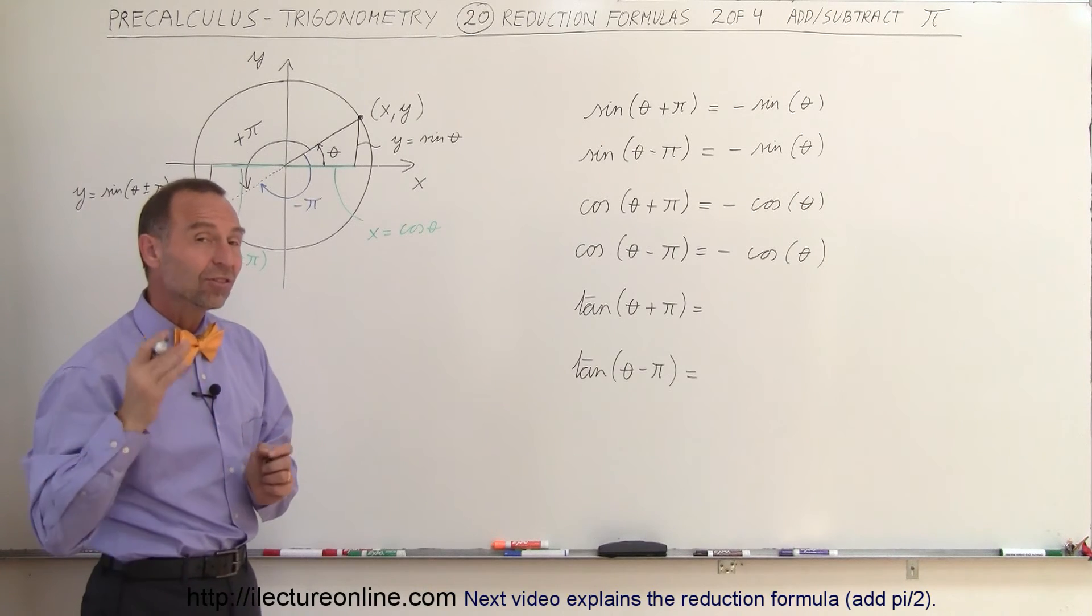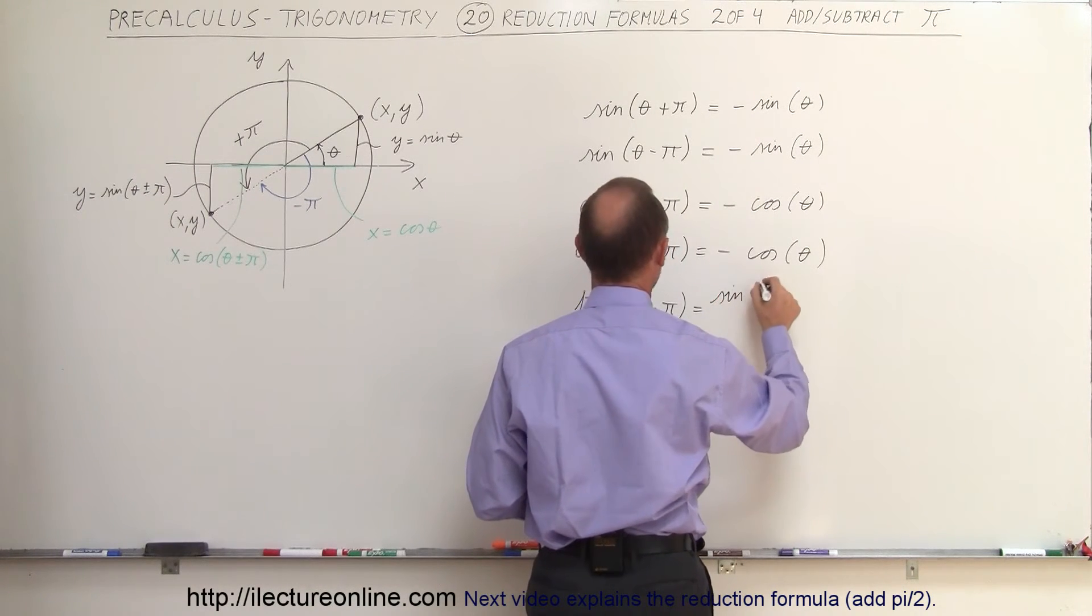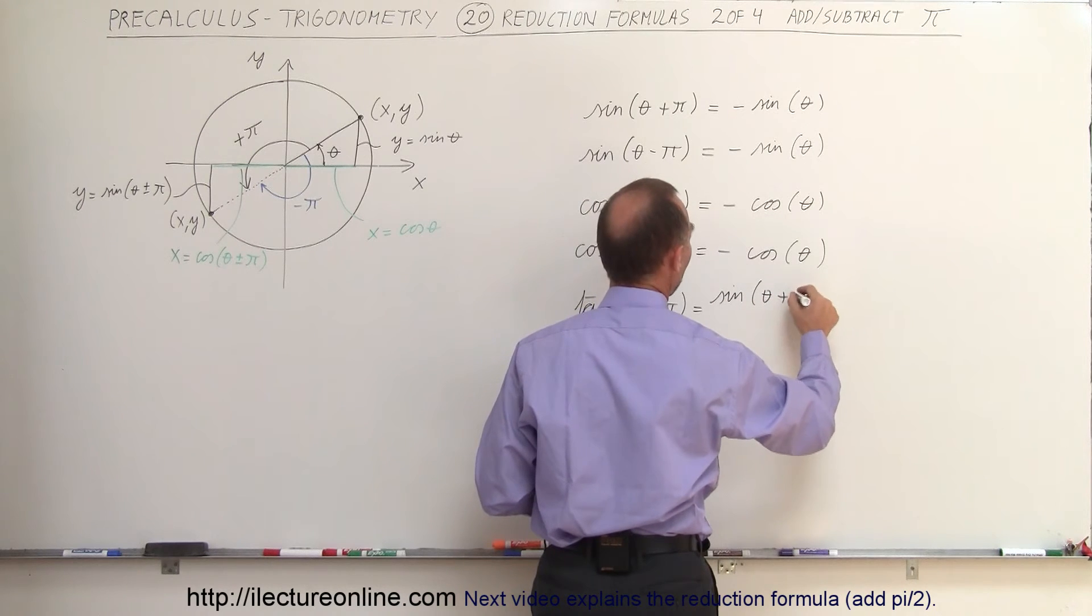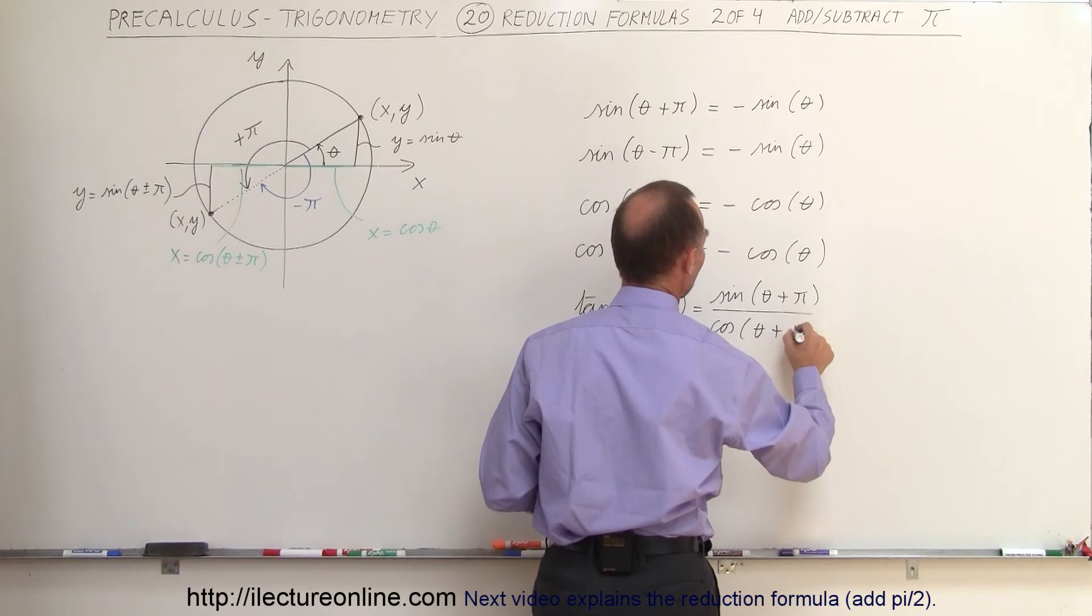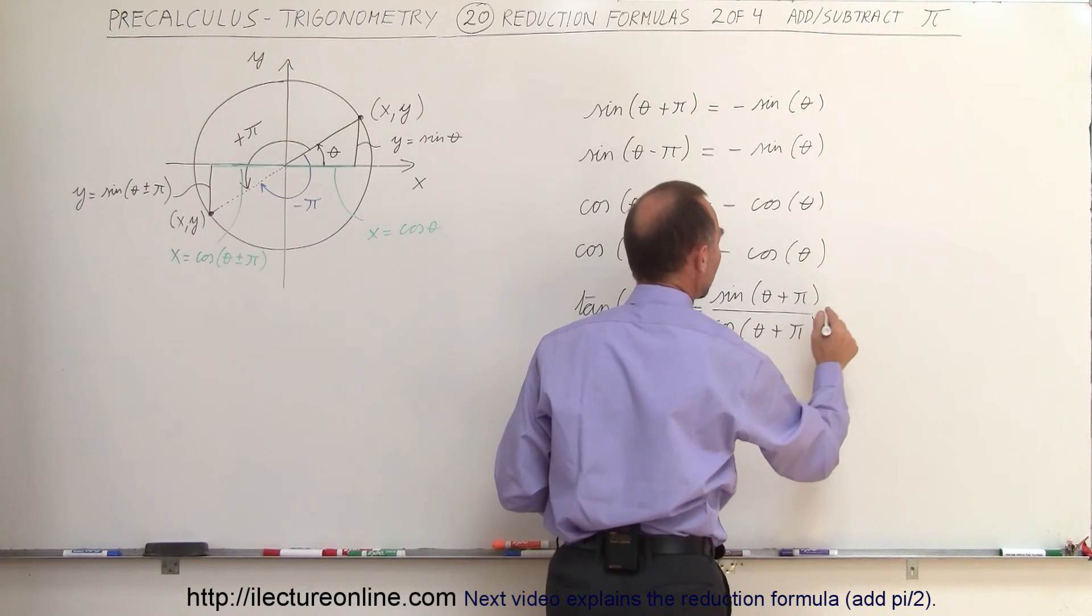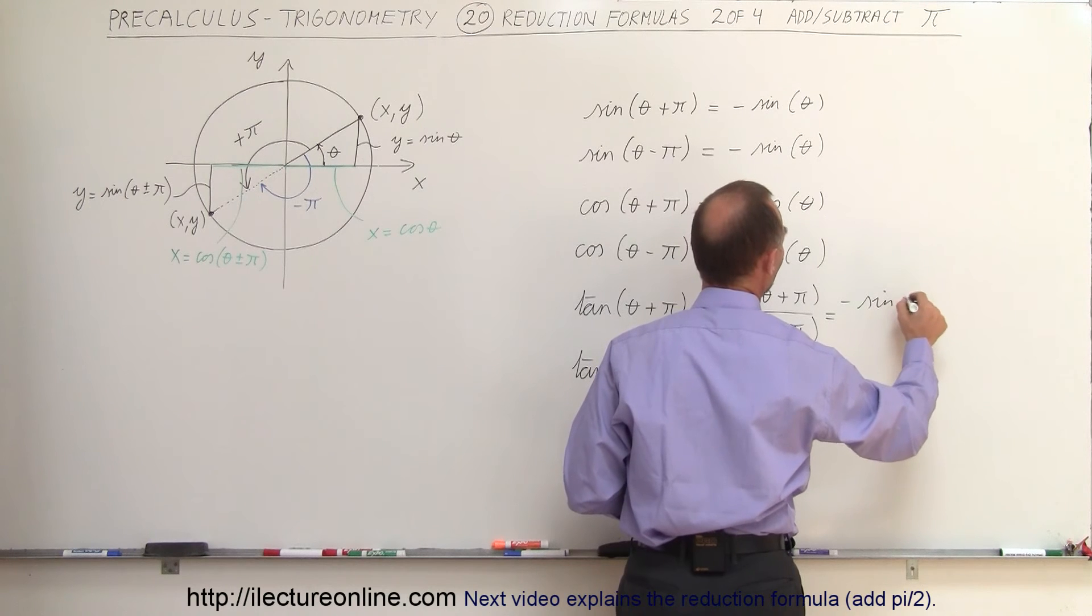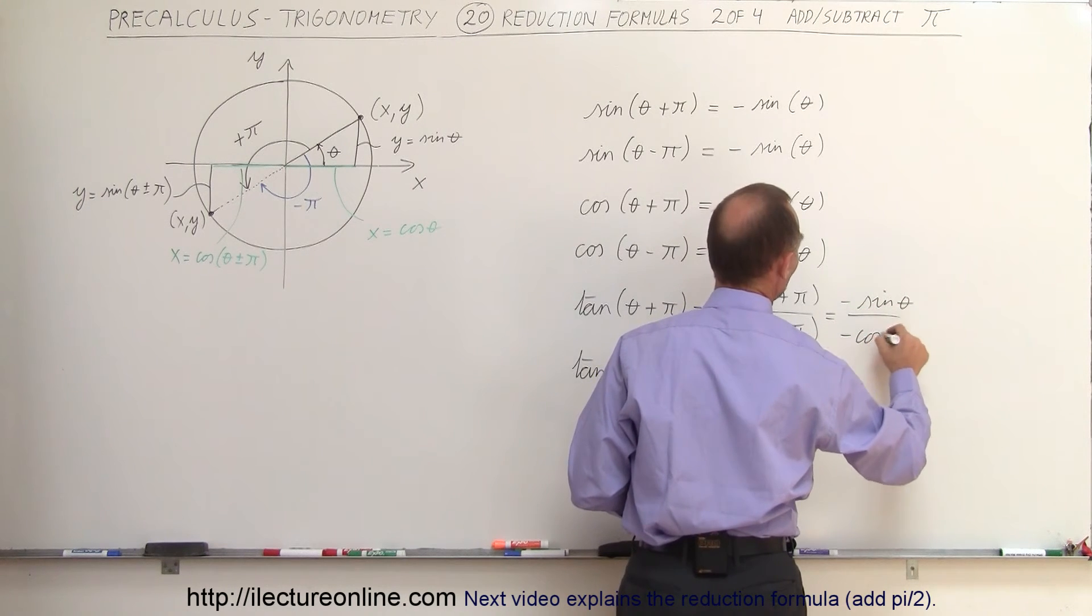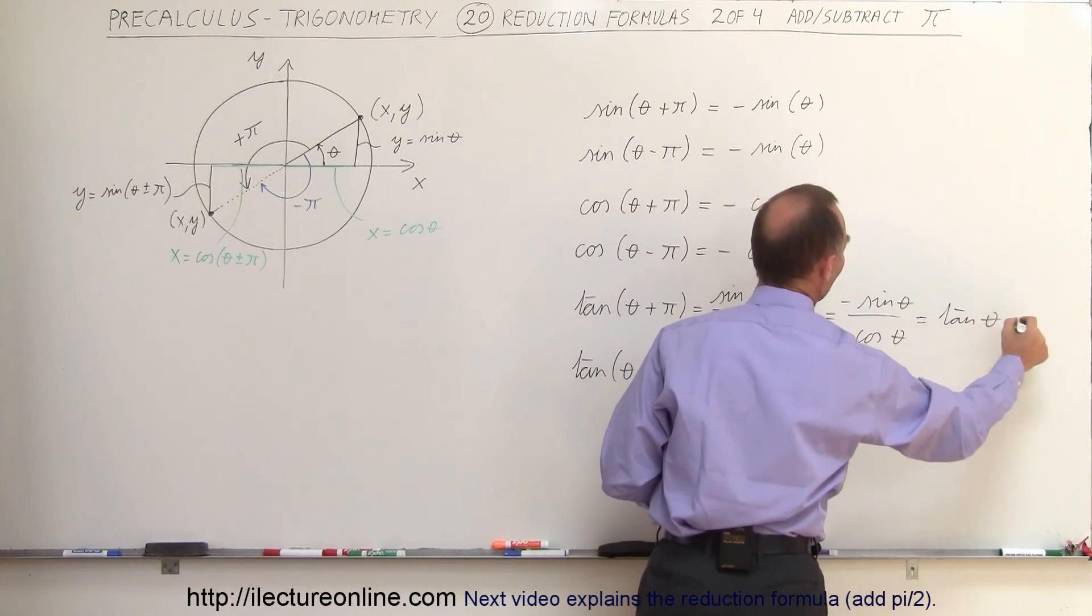But with the tangent, since the tangent is the sine over the cosine, this is equal to the sine of theta plus pi divided by the cosine of theta plus pi. And notice that each of those become a negative number. So that's minus the sine of theta divided by minus the cosine of theta and the negatives cancel out which gives us the tangent of theta.